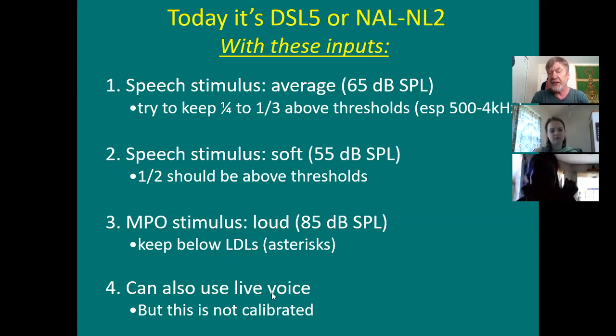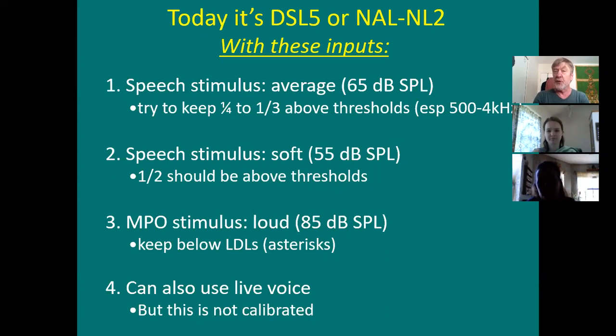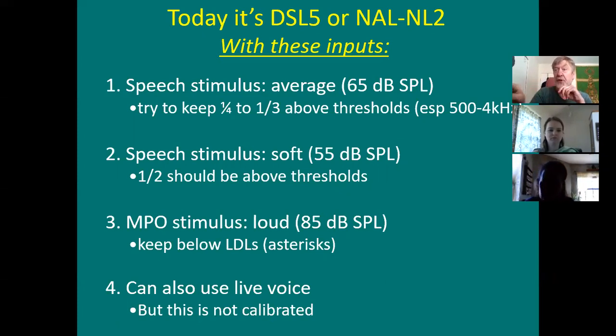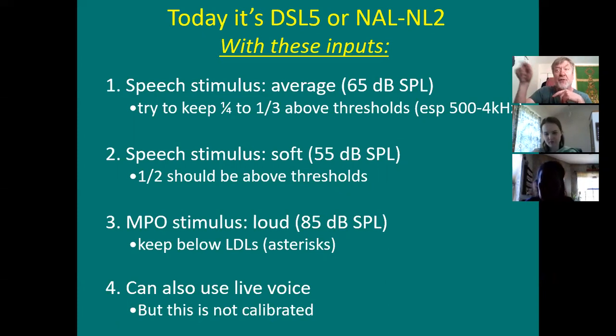Some people also use live voice of a spouse or a loved one — that's not a bad idea. It makes things homey, but the problem is it's not calibrated. If you want to draw in the spouse and make connections, you can have him or her talk at the husband wearing the hearing aids, then unaided — watch the outputs fall below the thresholds — and then aided at a normal loudness level, watch the outputs go above the thresholds. It actually draws in the client and makes the whole process a union of the relationship, because hearing loss involves connections. But the problem is the speech from the spouse isn't exactly the same as the rainbow passage or what they have on other real ear systems.